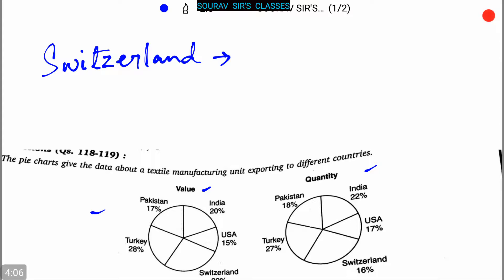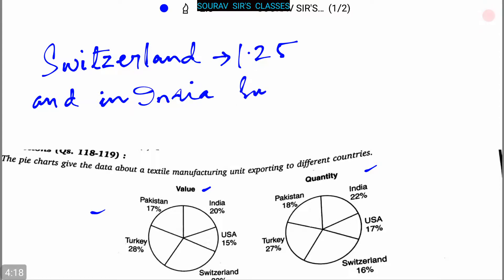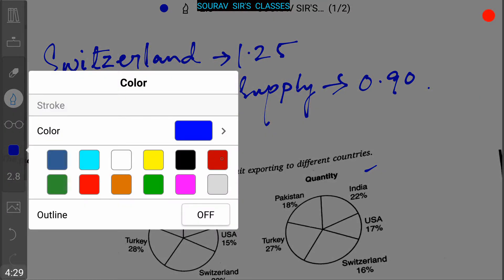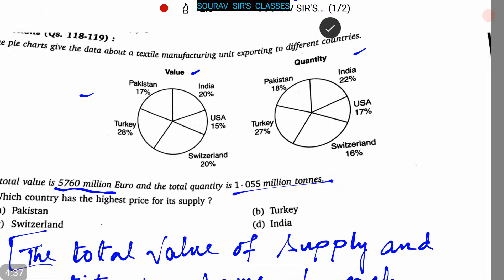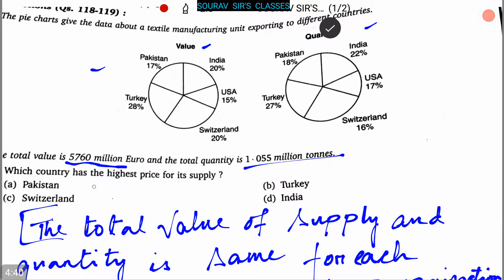For Switzerland, the ratio is 1.25, and for India the supply is 0.90. So here the highest amount is in Switzerland, that is 1.25. Therefore, Switzerland has the highest price for its supply, and option C is the correct answer.